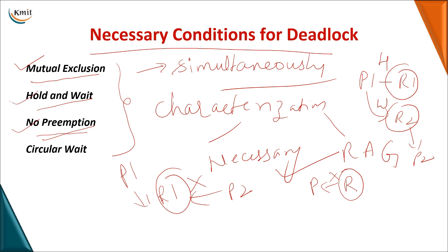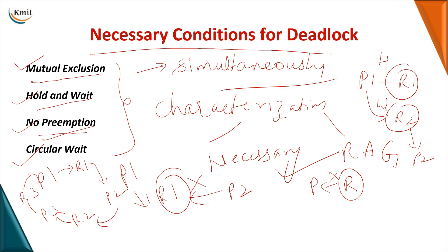The fourth condition is circular wait. P1 waits for resource R1 held by P2; P2 waits for resource R2 held by P3; P3 waits for resource R3 held by P1. You start with process one and come back to the same process — this is circular wait. If all four conditions are simultaneously present, then there is a deadlock. These four are called the necessary conditions for deadlock.